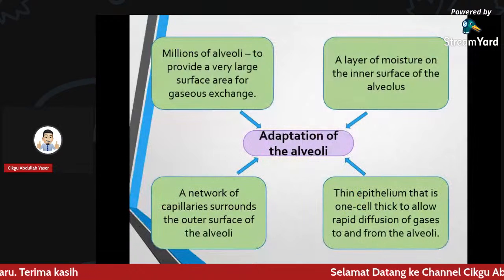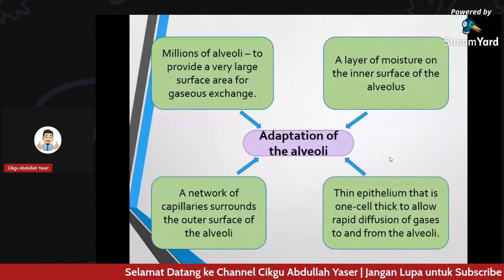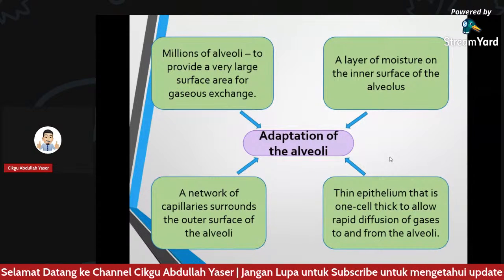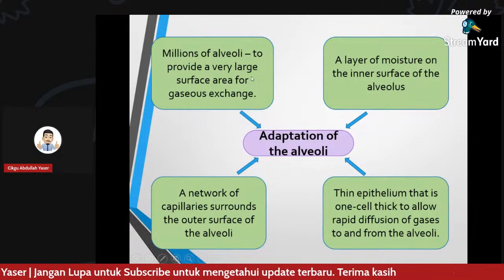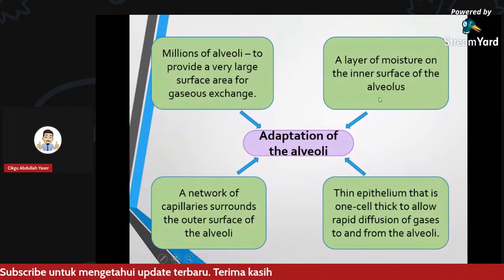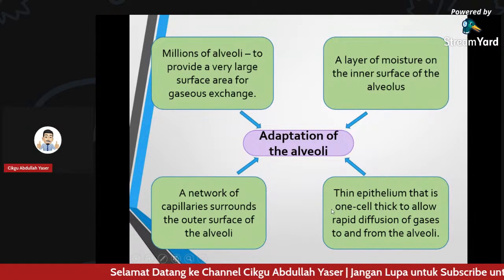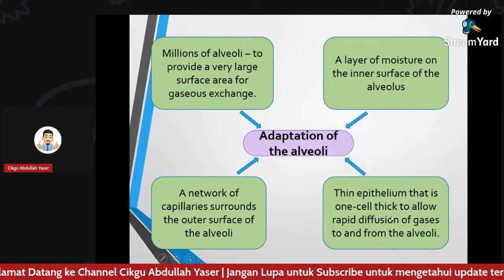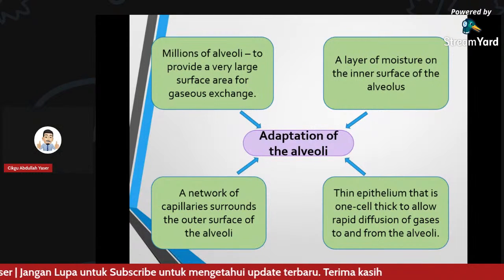In summary, there are millions of alveoli providing a very large surface area, a layer of moist inner surface of the alveolus, a network of capillaries surrounding the outer surface of the alveoli, and also a thin epithelium — one cell thick — to allow rapid diffusion of gases to and from the alveoli.